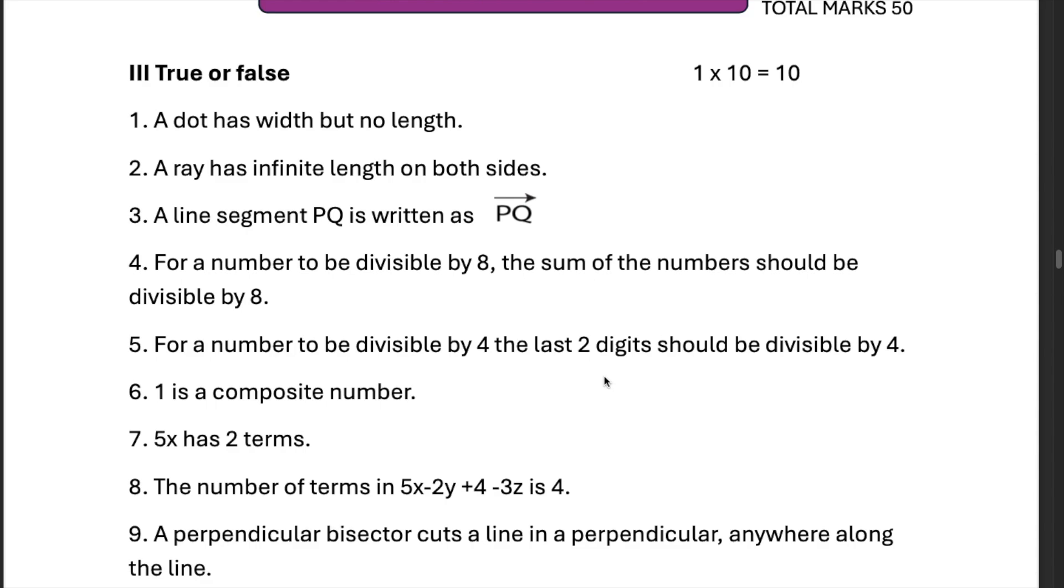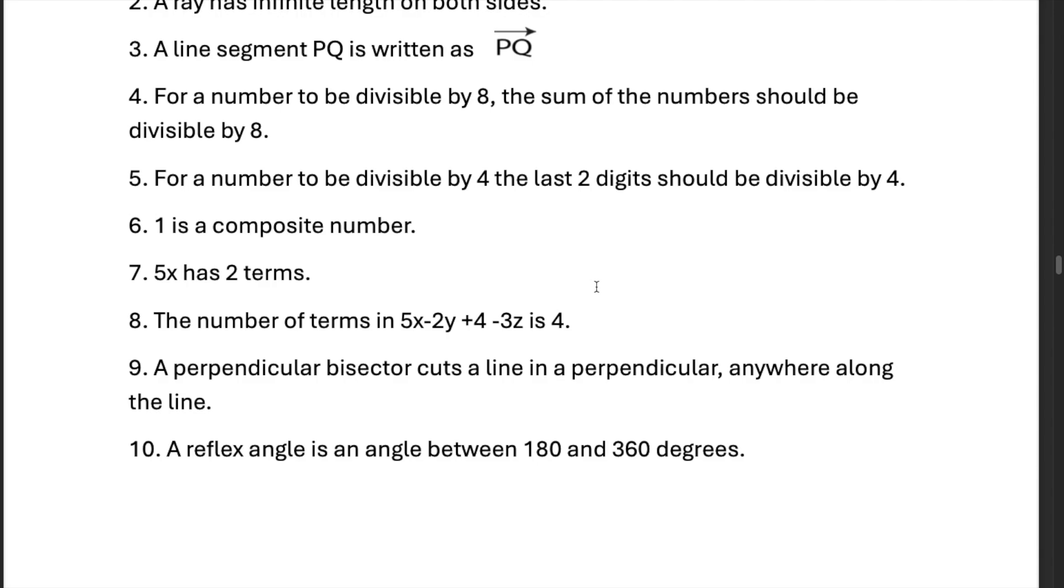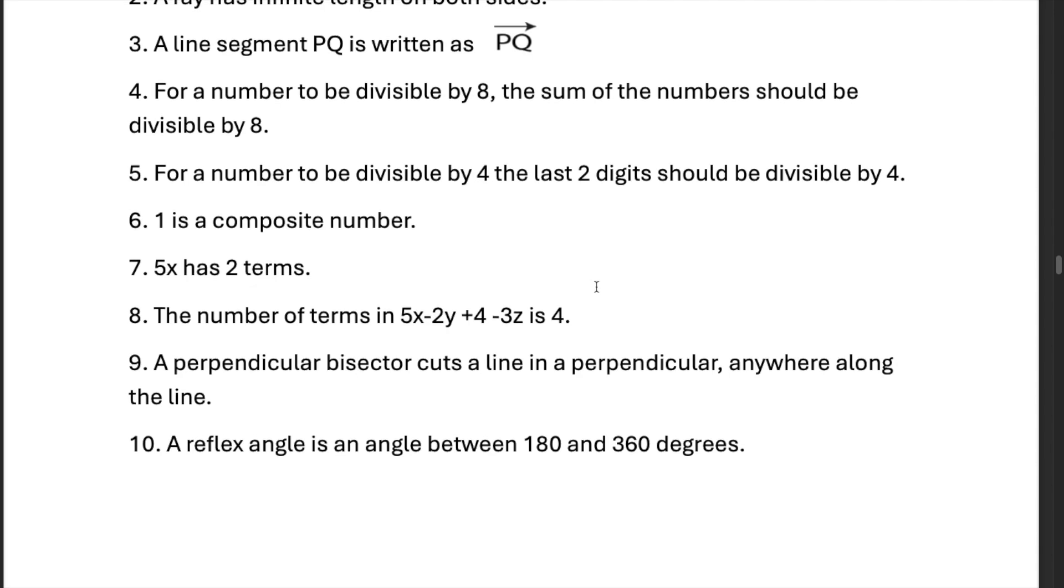1 is a composite number. No, it is not a composite or a prime number. It is a unique number. 5x has two terms. Wrong. 5x is considered only one term.